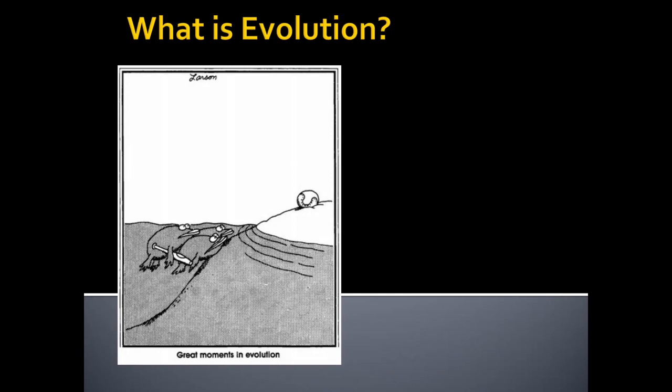This is a cartoon by Gary Larson — he wrote a comic strip called The Far Side. It's a humorous look at a motivating factor, perhaps, for the evolution of an ancient lineage. These pre-amphibians have to crawl up out of the water and make a great leap forward in evolution so that they can get their baseball.